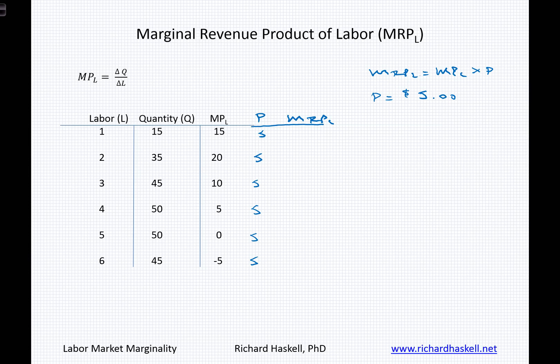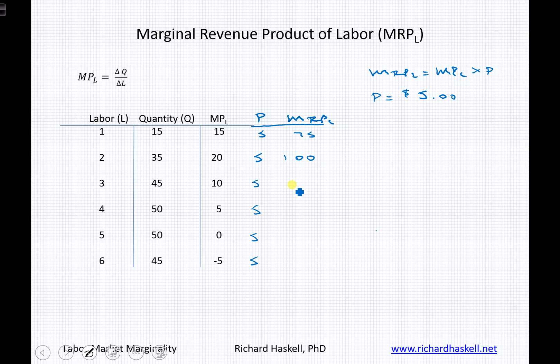MRP of L then is going to multiply those values such that: 15 times 5 is 75, 20 times 5 is 100, 10 times 5 is 50, 5 times 5 is 25, and 0 times 5 is 0.